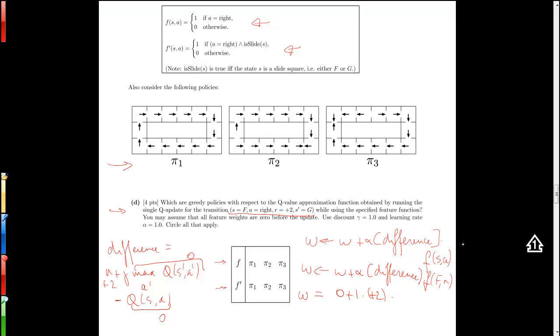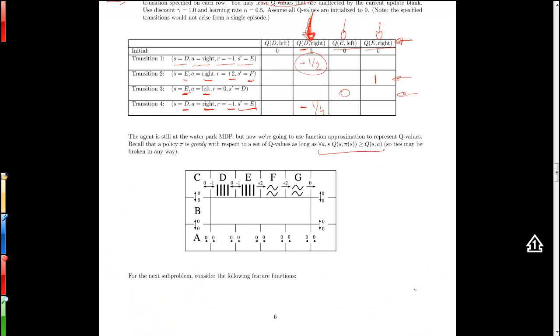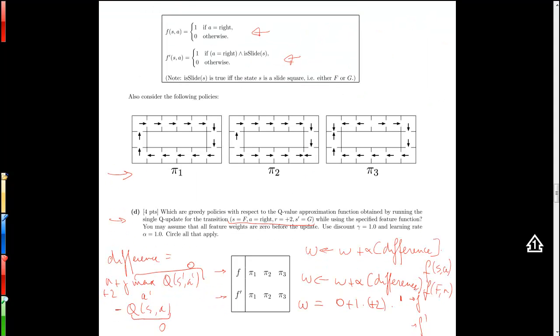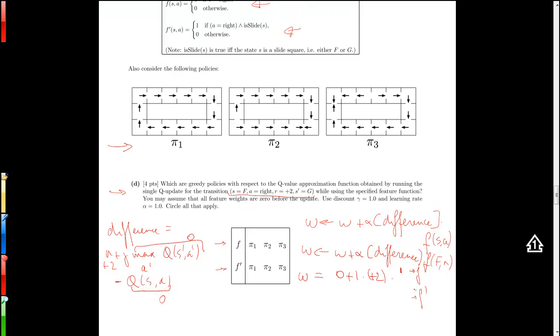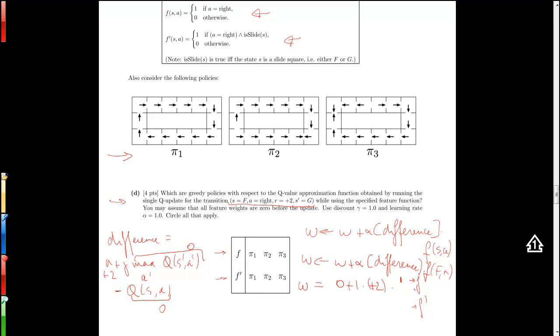Times the feature for F comma R. The feature for F comma R is if state is F and the action is right, so then it's 1. And for F prime, when we're in state F taking action R, and F is a slide state, we also have 1 here, and so we end up with a weight of plus 2.